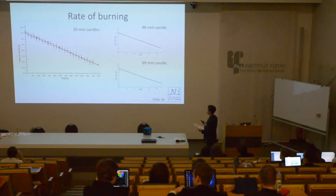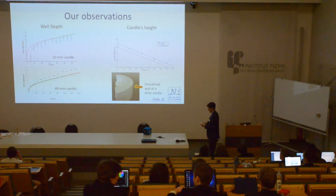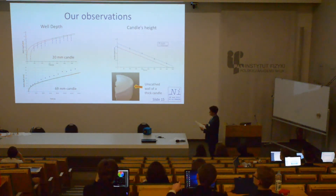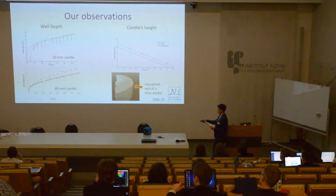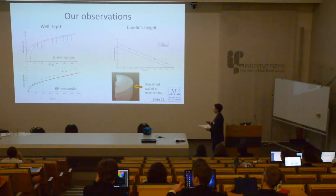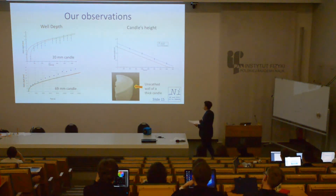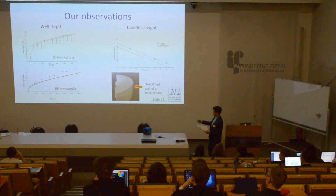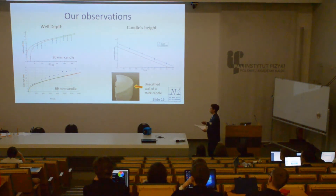The measurements of the depth of the well show that our theory was correct to a great extent. For the thickest candle, the well depth fits the experimental points almost exactly. However, the difference between prediction and experiment tends to rise because the wall of the candle didn't melt, which we didn't account for in our formula. For the thinner candle, the curve fits the experimental points very well when shifted about 300 seconds to the right — because those 300 seconds were used by the candle to establish a proper flame, and the well started to form only after that 5 minutes.